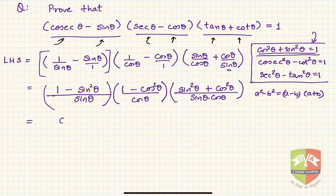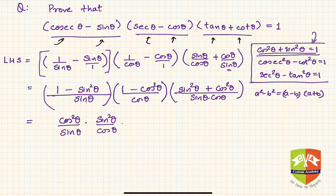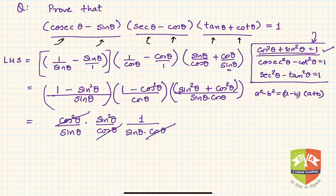Now it becomes very simple. The three numerators are all related to the Pythagorean identity. So 1 minus sine squared is cos squared theta over sine theta, and 1 minus cos squared is sine squared theta over cos theta. Then cos squared cancels with cos, sine squared cancels with sine, and we are reduced to one, which equals the RHS.